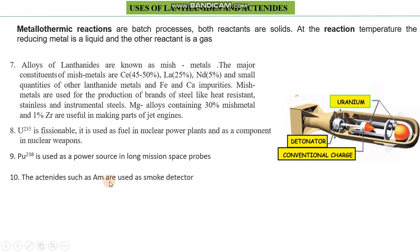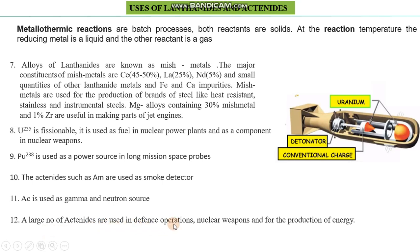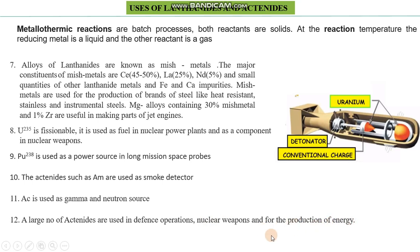Actinides such as americium are used as smoke detectors, which are regarded as security components. Actinides are also used as gamma and neutron sources, which have various useful applications. A large number of actinides are used in defense operations — for example, nuclear weapons for destructive purposes and for the production of energy for constructive purposes.